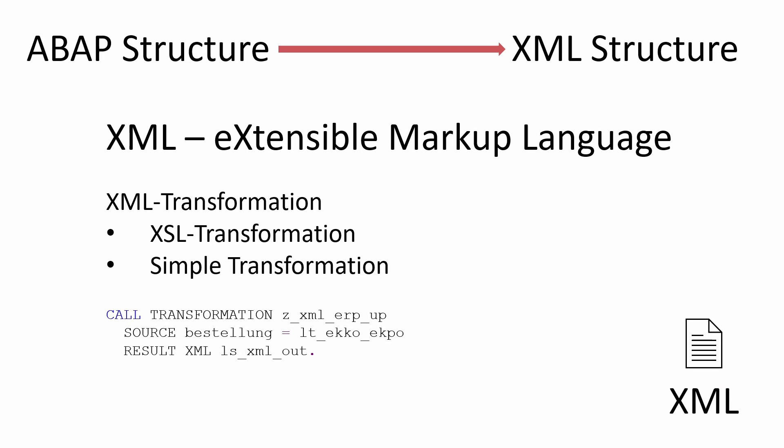Before jumping into the SAP system and creating an XML transformation, I would like to explain what an XML transformation is. An XML transformation is a conversion of an ABAP structure or ABAP table type into an XML structure. This makes it possible to pack desired data in the SAP system into an XML file and process it in a separate system. An XML transformation can thus provide a simple interface, since XML is still one of the most widely used data structures today.